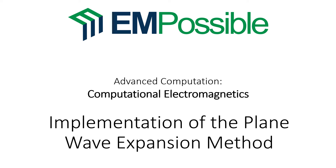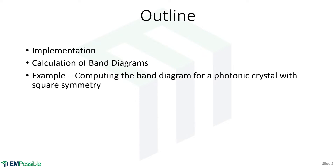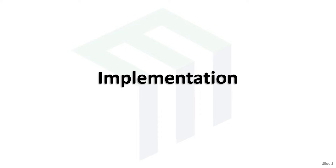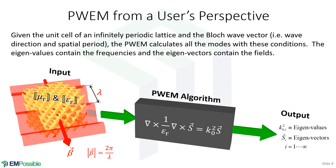We're discussing the implementation of the plane wave expansion method. Up to this point we've derived a lot of equations, and in this lecture we will talk about how to actually use those to calculate photonic band diagrams. Let's wrap a black box around our plane wave expansion method and think of it almost like a magic eight ball — the inputs are a description of the lattice, our convolution matrices, and a block wave vector.